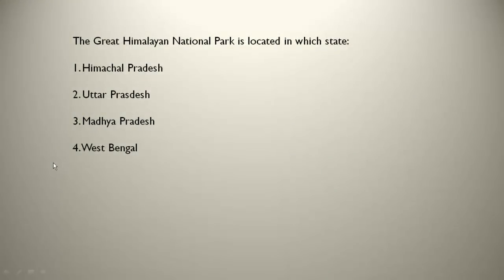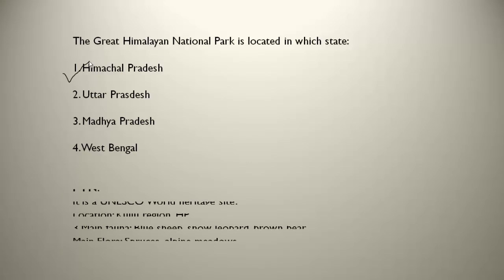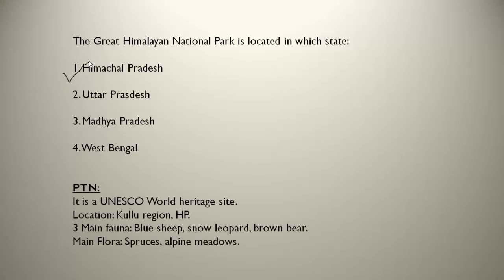The Great Himalayan National Park is located in which state? It is in Himachal Pradesh. It is a UNESCO World Heritage Site. Its location is in the Kullu region of Himachal Pradesh. The three main fauna are blue sheep, snow leopard, and brown bear. The main flora are spruces, alpine vegetation, and meadows. Flora and fauna are discussed because exam questions directly ask where specific animals are found.